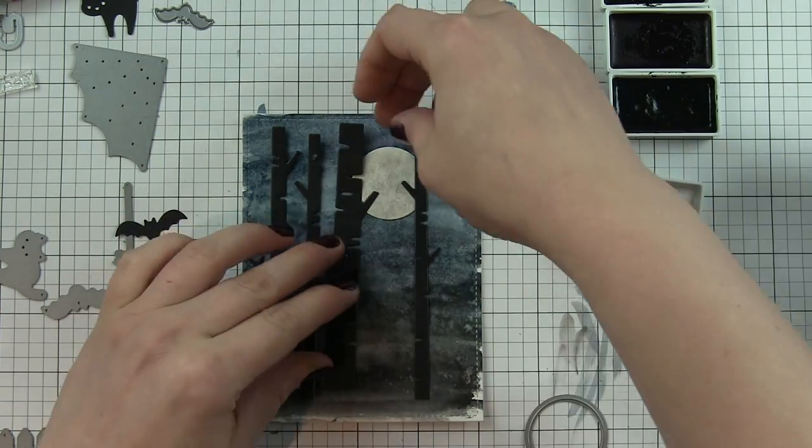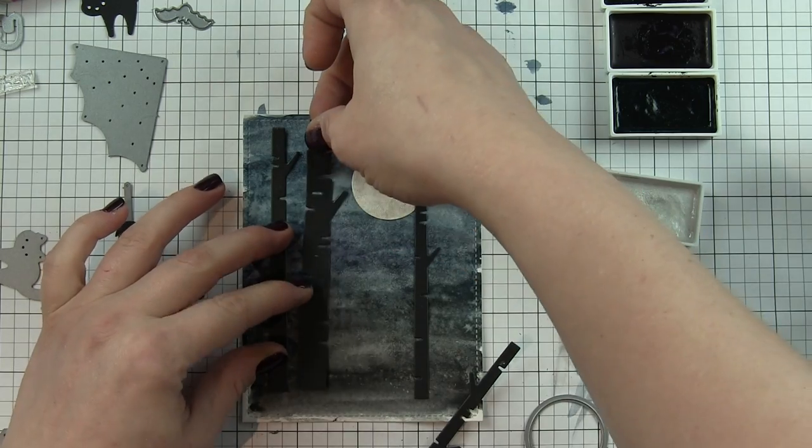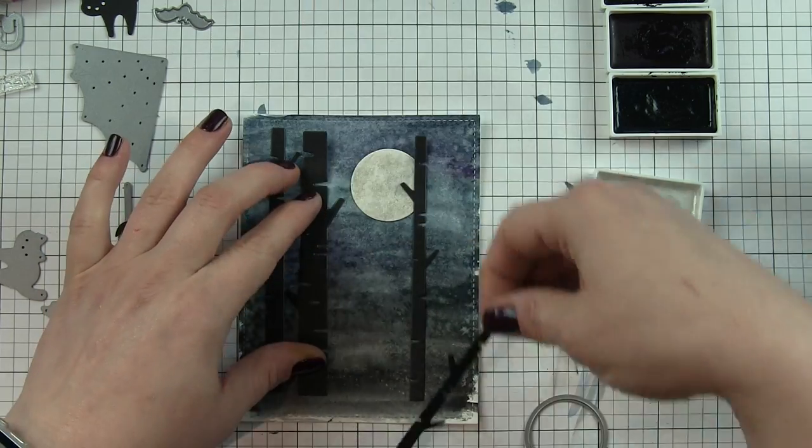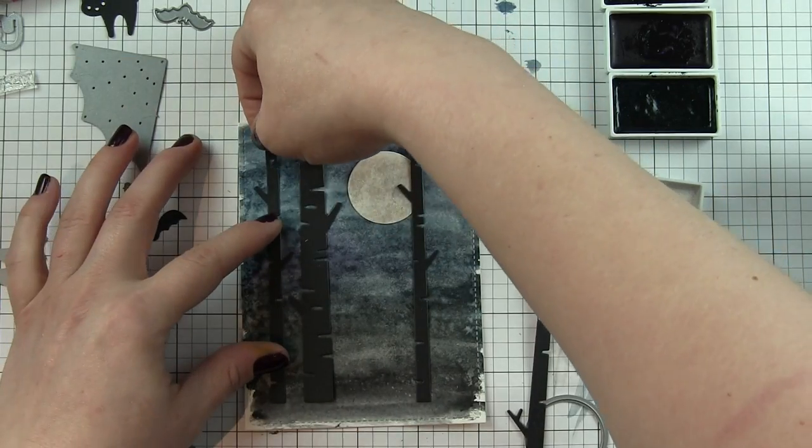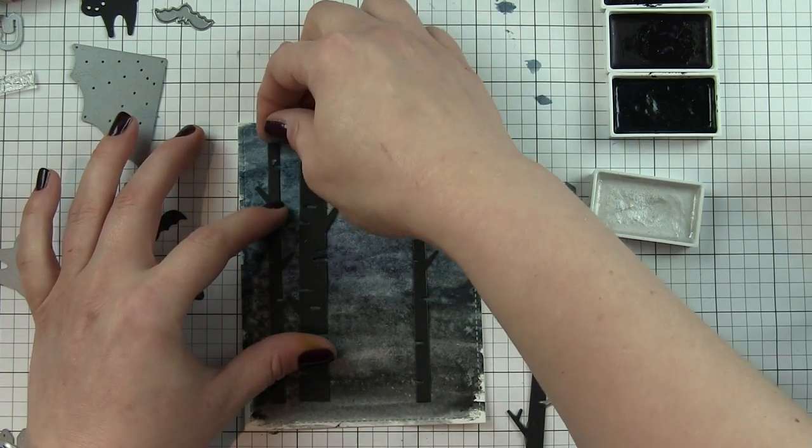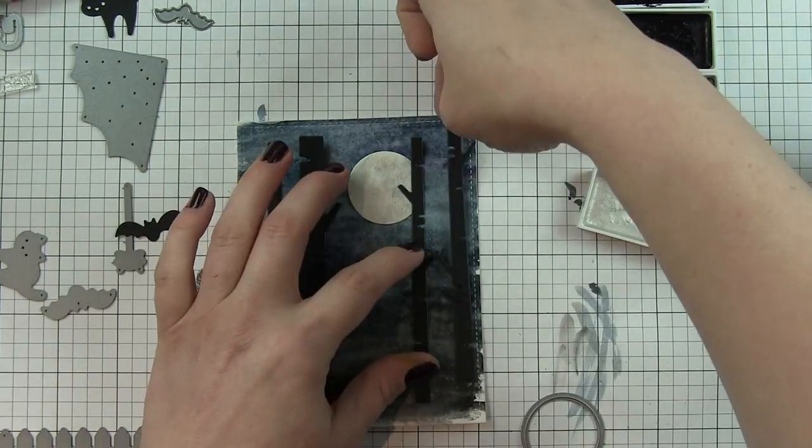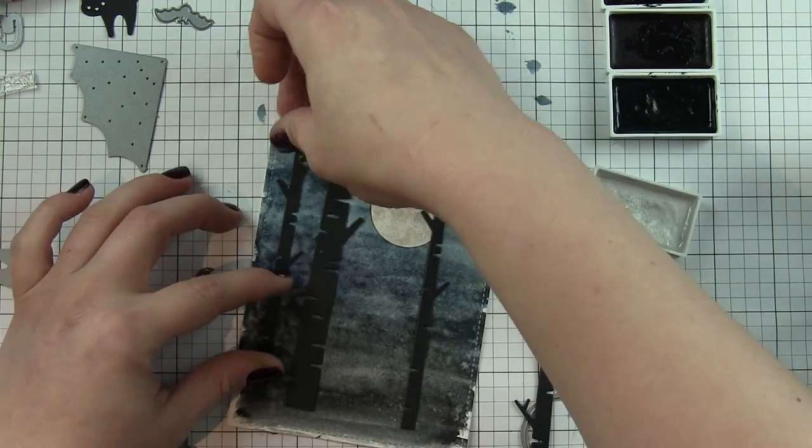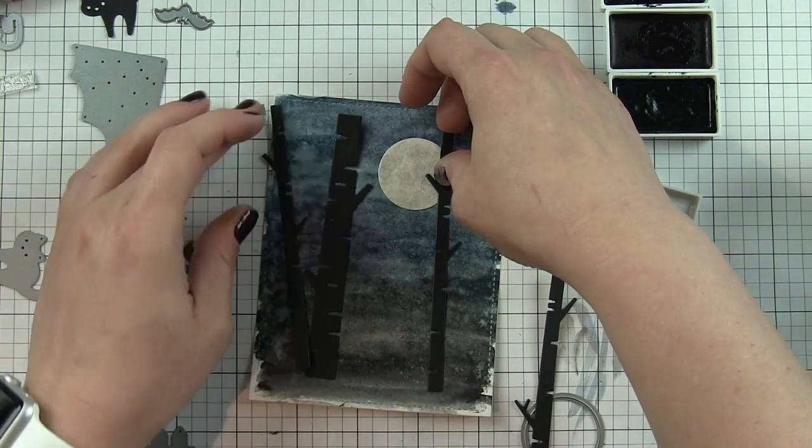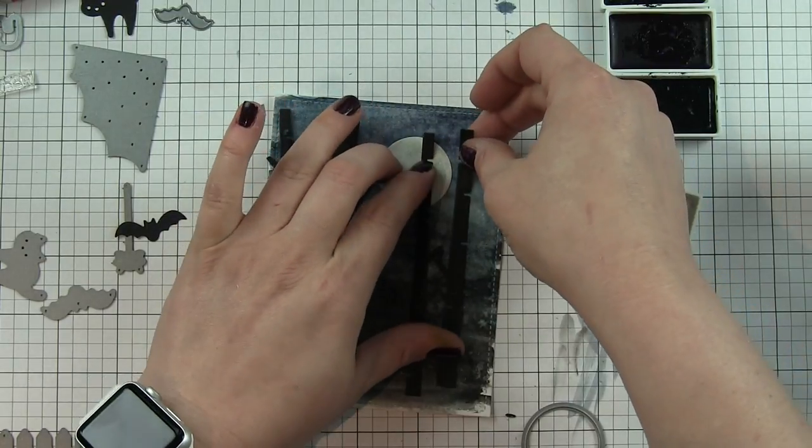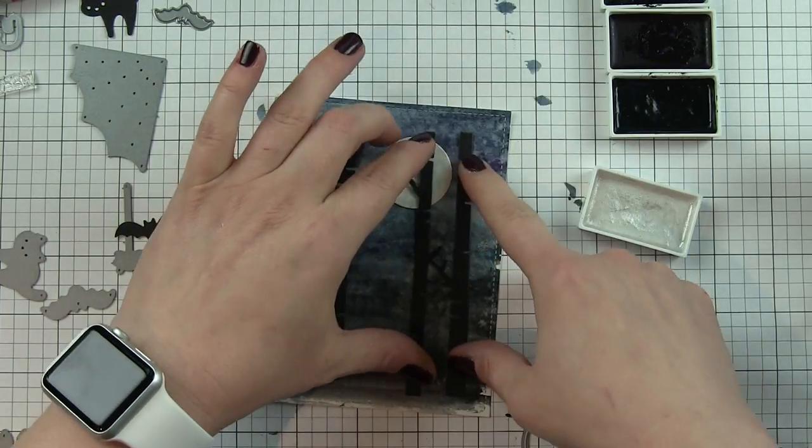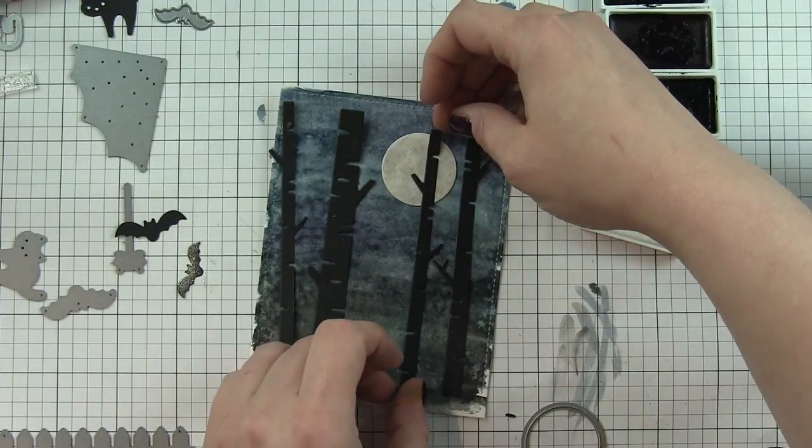I've also pre-die cut lots of elements here to kind of cut down on the time for the video. I've got some birch trees out of black licorice cardstock from the birch trees dies. These work great for so many different projects whether it be holiday themed, winter themed, Halloween themed, fall themed. I just love these dies and I can see that they're going to get a lot of use.